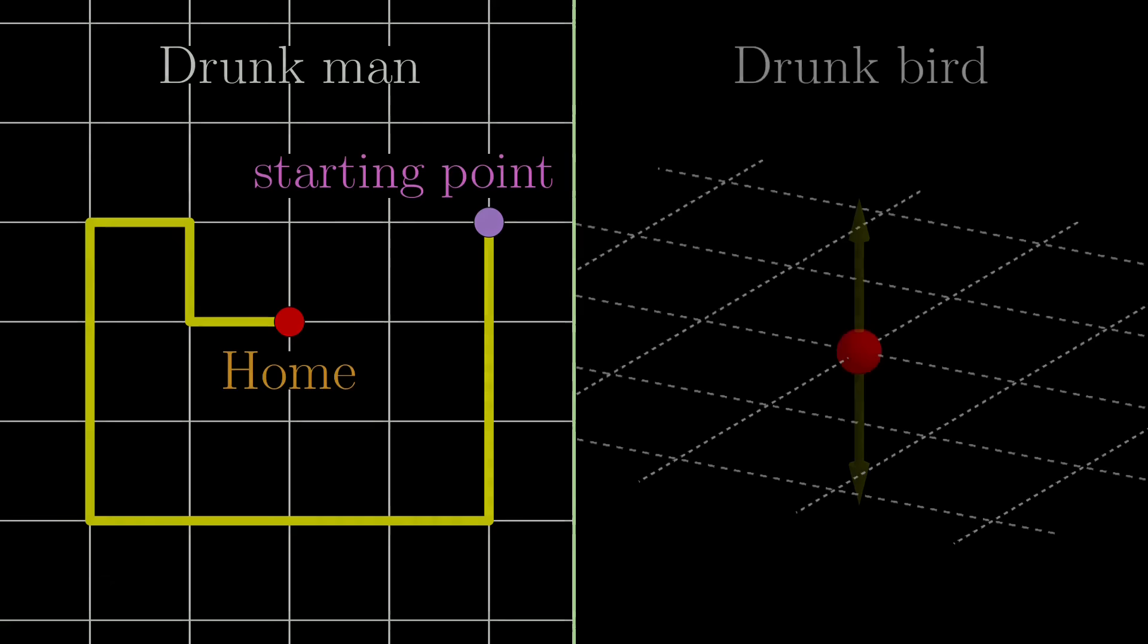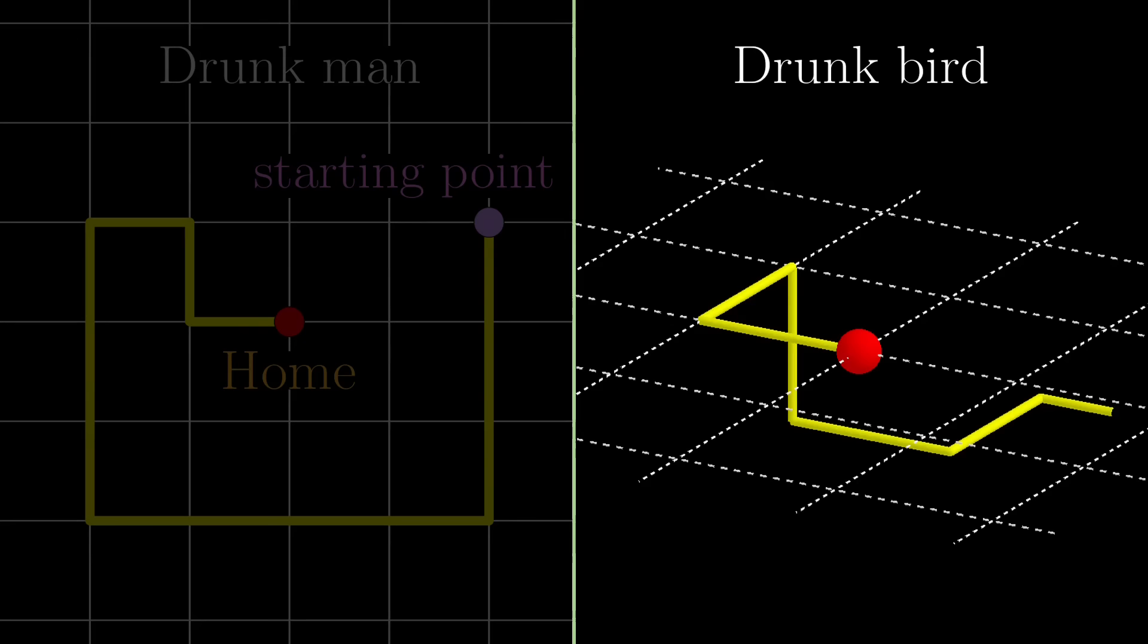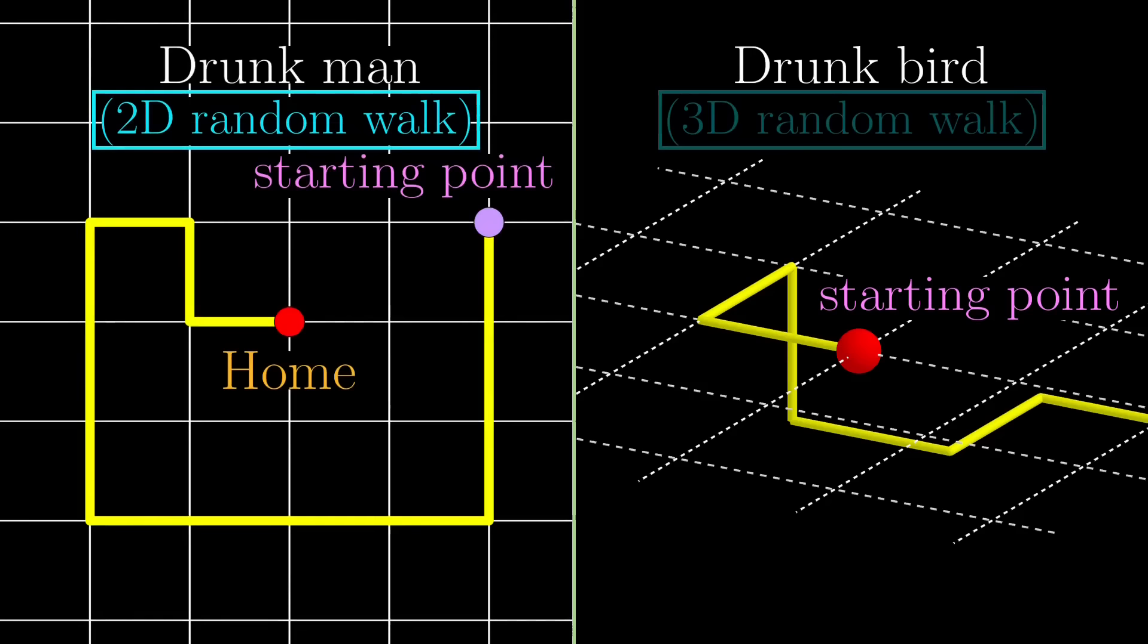But for the bird, there is a non-zero chance that it will get lost forever, even if it started off in its own nest. Why is there such a stark difference between a 2D and a 3D random walk? To answer this question, we use the framework of Markov chains.